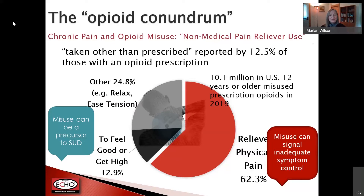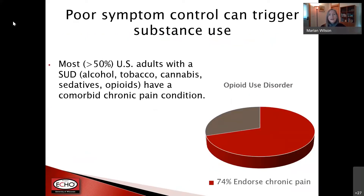It's important to note that they tell you they're using it to relieve a symptom. Misuse can certainly signal some inadequate symptom control, and misuse can also be a precursor to substance use disorder. There's a whole list of behaviors people may exhibit when prescribed opioids for pain that flag them as having aberrant behaviors, but it's important to remember those behaviors are sometimes triggered by inadequate symptom control.